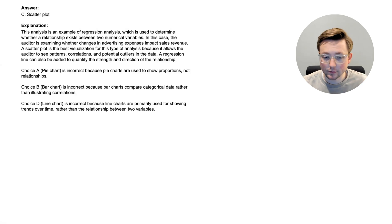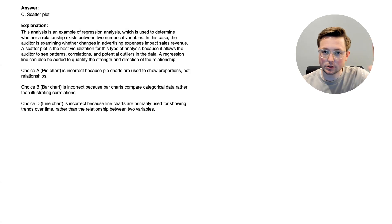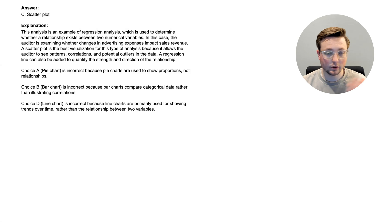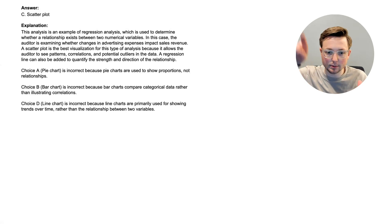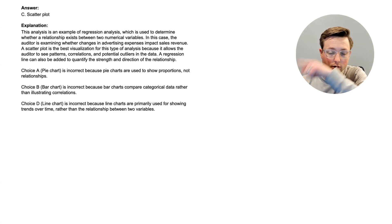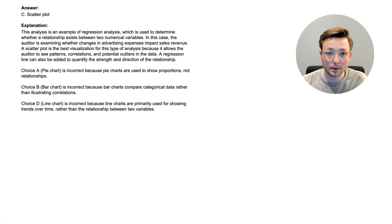Let's talk about the other choices. Choice A, a pie chart, is incorrect because pie charts are used to show proportions, not relationships — they show the percentage of the whole that one category represents. Choice B, a bar chart, is incorrect because bar charts compare categorical data rather than illustrating correlations. Choice D, a line chart, is incorrect because line charts are primarily used to show trends over time rather than relationships between two variables. So scatter plots are used for regression analysis; line charts are more for showing how things change over time. Now let's go to the next question.